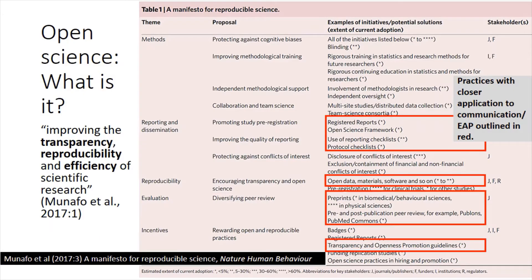What is open science? It's a range of reforms with the goals of improving the transparency of scientific research. So that means making more scientific information available to more people, typically by getting our data sets, our methods, our materials, and making it all available on an online repository.